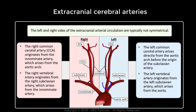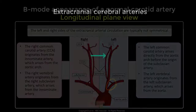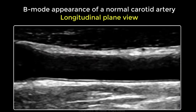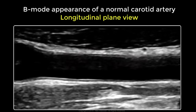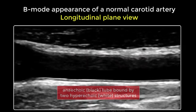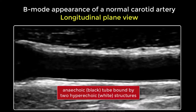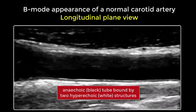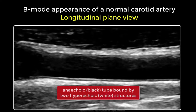The left common carotid artery generally arises off the aortic arch and divides into the internal and external carotid arteries. The left subclavian artery usually arises off the aortic arch and feeds the left vertebral artery. The ultrasound appearance of the arteries is peculiar — an artery appears on ultrasound as an anechoic tube bound by two hyperechoic structures.